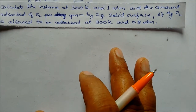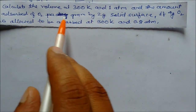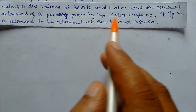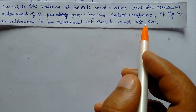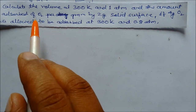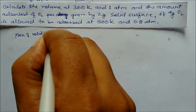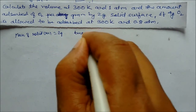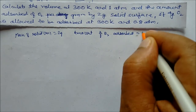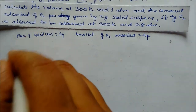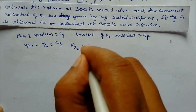Calculate the volume at 300 K and 1 atmospheric pressure of the amount adsorbed by oxygen per gram, if 4 grams of oxygen is allowed to be adsorbed on 2 grams of solid surface at 300 K and 0.8 atmosphere. So mass of solid m is 2 grams, and amount of oxygen adsorbed x is 4 grams, so x/m equals 4/2 equals 2 grams.